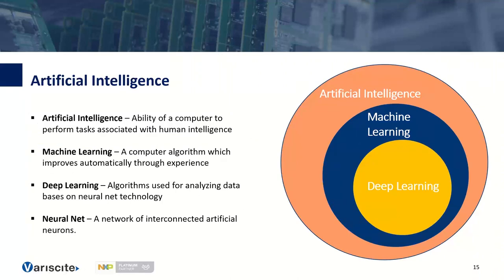I'll give a brief overview of artificial intelligence and machine learning, especially on the edge. Artificial intelligence is the ability of a computer to perform tasks associated with human intelligence — making complex decisions and analyzing complex problems. Machine learning is a subset: a computer algorithm that learns from experience and new data to predict outcomes. Deep learning is a subset of machine learning used for analyzing data, based on neural network technologies.